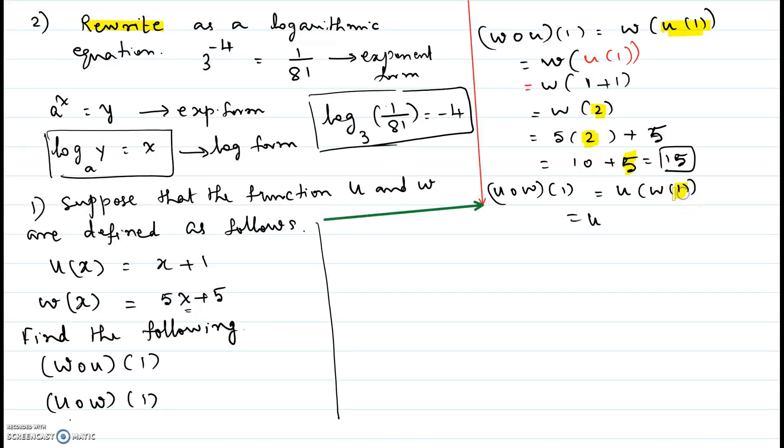So the input of w is 1 or the x in w must be changed to 1. So it is u and inside it is 5 times 1 plus 5. So what we are doing here is we are taking the w which is this w and changing the input or the x here to 1.